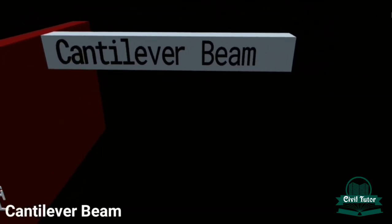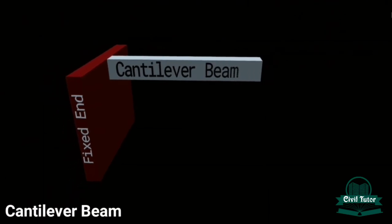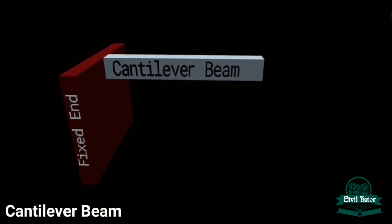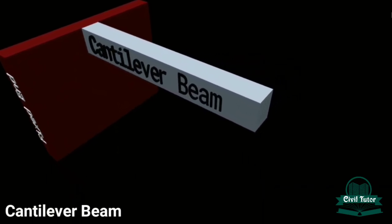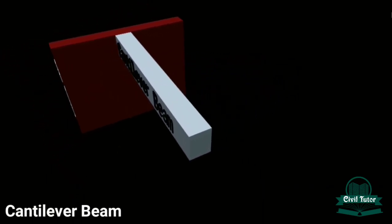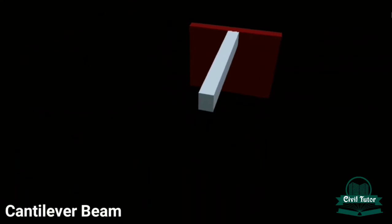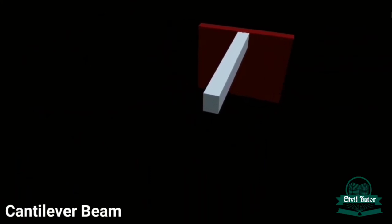The second one is the cantilever beam. It's a type of beam which is fixed at one end and free at the other end. As you can clearly see in the visuals, one end of the cantilever beam is fixed in the wall and the other end is free.